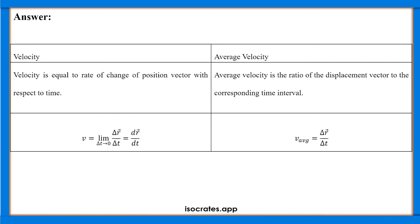Consider a bike moving: at 0 seconds, what is the position of that object, and at the 50th second — the last second — what is the position of the object? The ratio of the displacement, that is the position at the 50th second minus the position at 0 seconds, to the corresponding time interval — 50 minus 0 — gives us the average velocity over those 50 seconds.